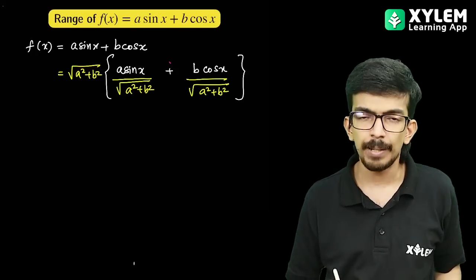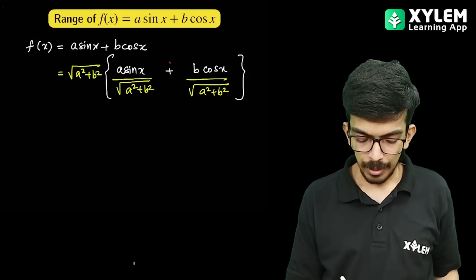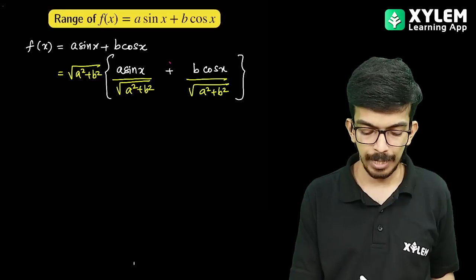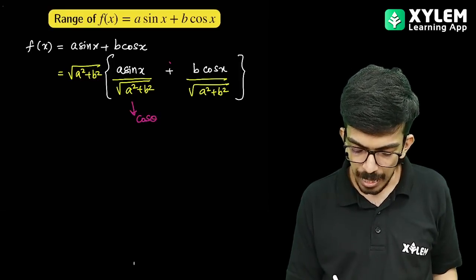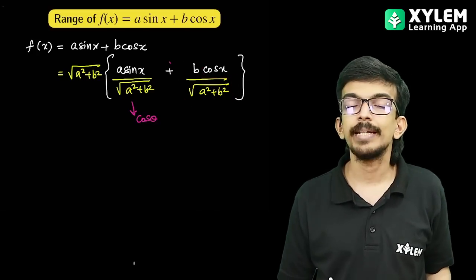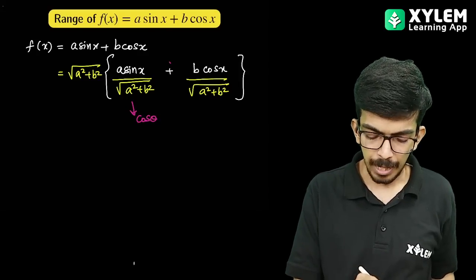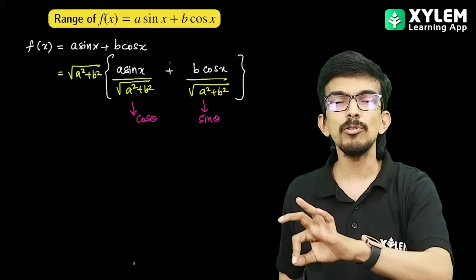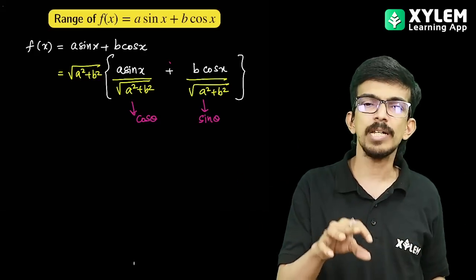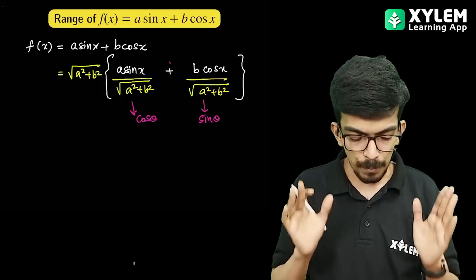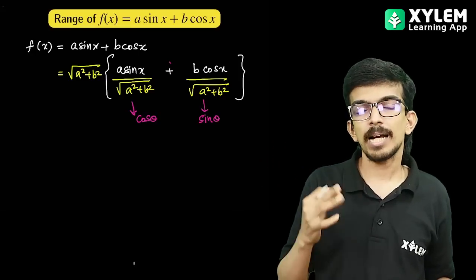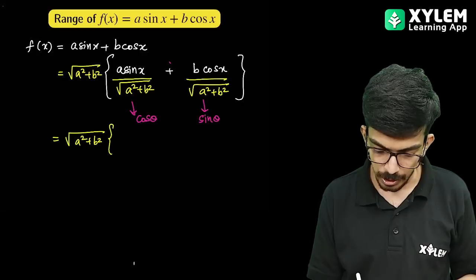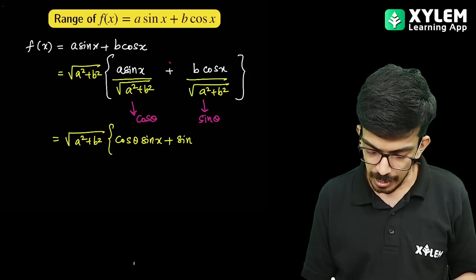I am going to show you what I am doing. b by root over a square plus b square is automatically sin theta. We have a by root over a square plus b square, and b by root over a square plus b square squared adds to 1, so we consider sin theta and cos theta. This expression is root over a square plus b square times cos theta into sin x plus sin theta into cos x.